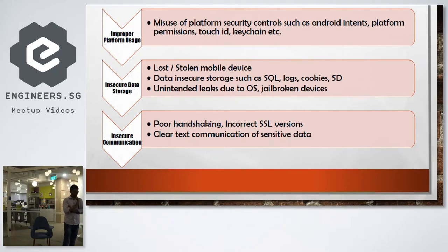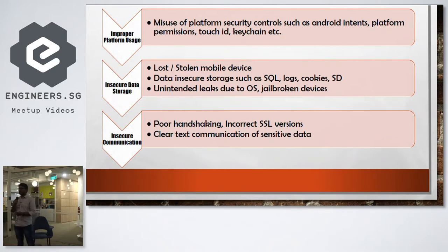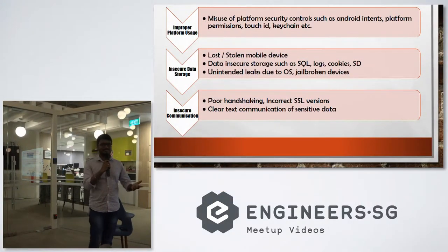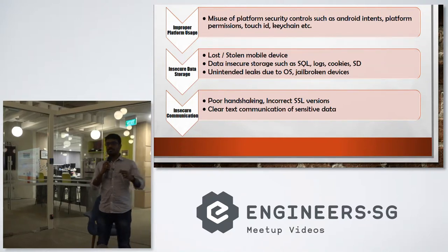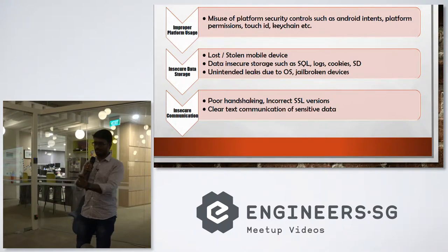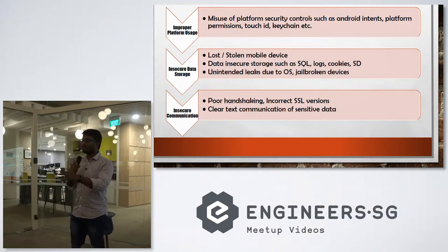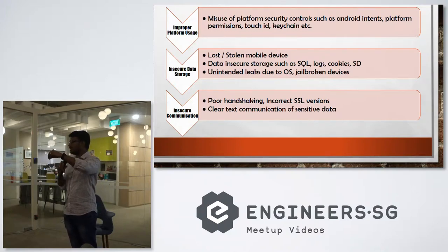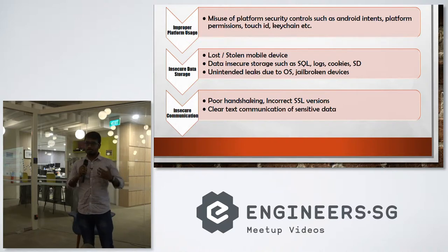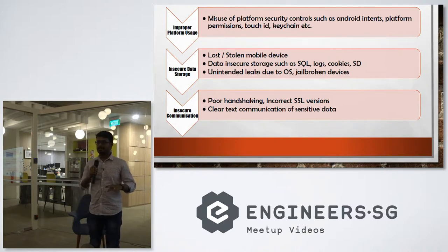The second OWASP vulnerability is insecure data storage — this is a very important one. When you use applications, many folders are created inside your device. For example, Lazada will have a Lazada folder and Fitness First will have its own folder on your SD card. Whatever information you access, data and cache will be stored in those respective folders. We are at a critical stage to determine what data needs to be stored and what does not.